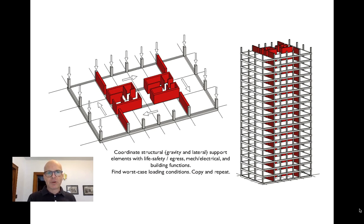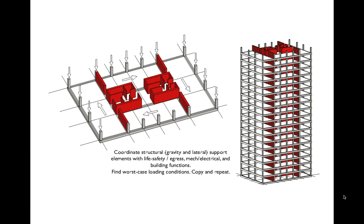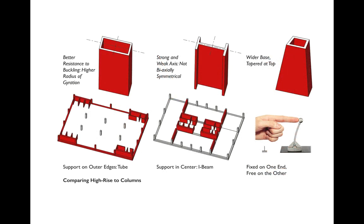Those web shear walls might interfere with building function. Skyscraper clients typically want perfectly open floor plates, so those shear walls may be unacceptable. We may need to compress all gravity and lateral functions into the core itself. There's a constant back-and-forth between the client's desire for open floor plates and the engineer's desire for efficient shapes resisting lateral forces. What the engineer ideally wants is a hollow tube—shear walls forming a hollow tube—thinking of the building as both a giant column and a perfectly efficient beam in any direction.